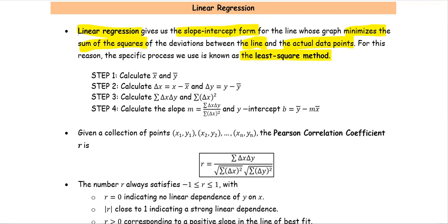There are four steps. Step one, calculate the average of the x and y values, called x bar and y bar respectively. Step two, calculate delta x, which is the difference of x and x bar, and delta y, the difference of y and y bar.